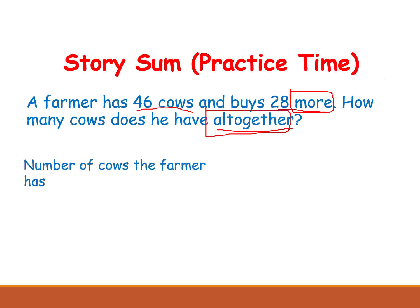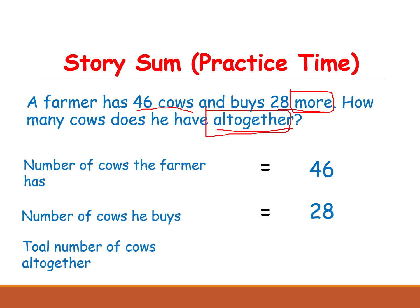First, the number of cows the farmer has, and the next sentence gives the number of cows he buys more. He has 46 already and he bought 28 more. What are they asking? How many cows does he have altogether — meaning the total number of cows. Now do addition.